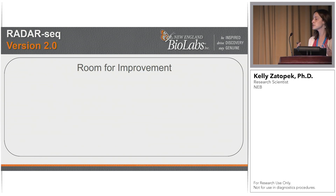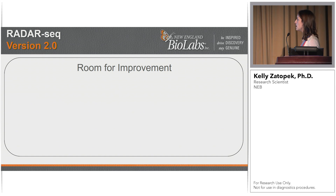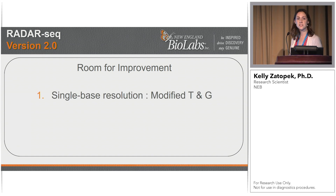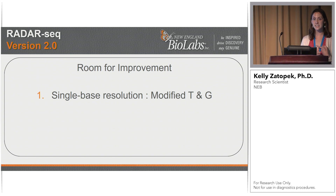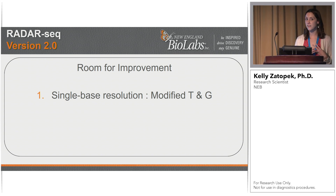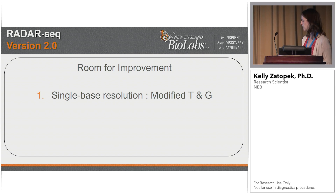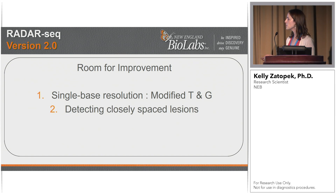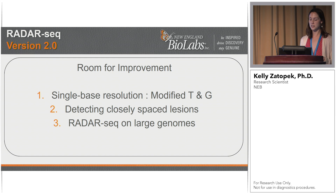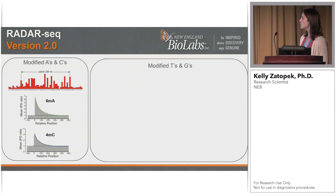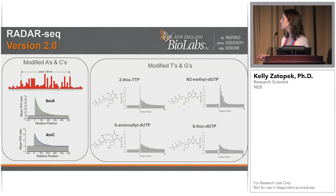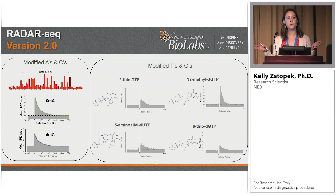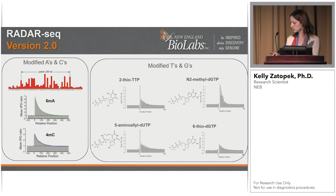There's definitely room for improvement, and in version 2.0 we're going to overcome some of the pitfalls of RADAR-Seq version 1.0. Current problems include lacking single base resolution — we have modified A and modified C but are missing modified G and modified T from the nucleotide pool. We want modified T and G to achieve single base resolution, detect closely spaced lesions, and apply RADAR-Seq to larger genomes. Our current efforts focus on a variety of modified T's and G's so that all four nucleotides are modified, enabling single base resolution.